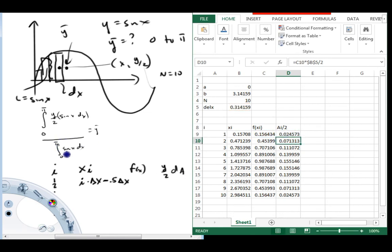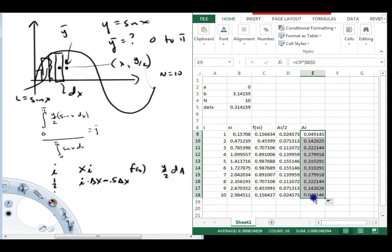We're also going to need this. We're going to need the total area here, so I'm going to make one more column, which is a sub i. And those are just going to equal the function values times delta x. And again, we want to double dollar that.